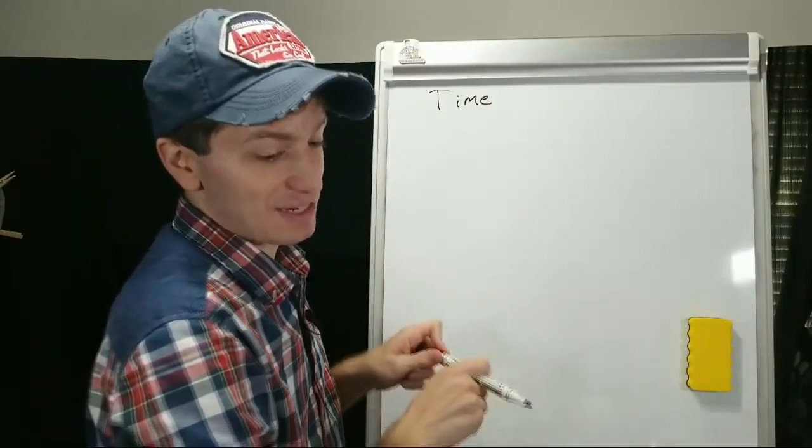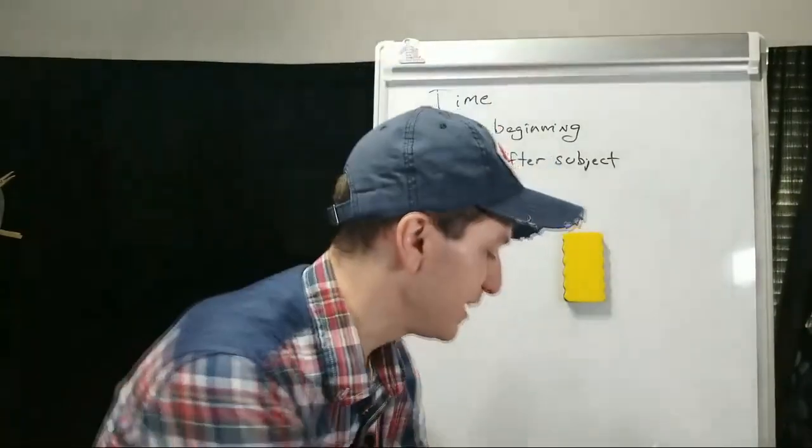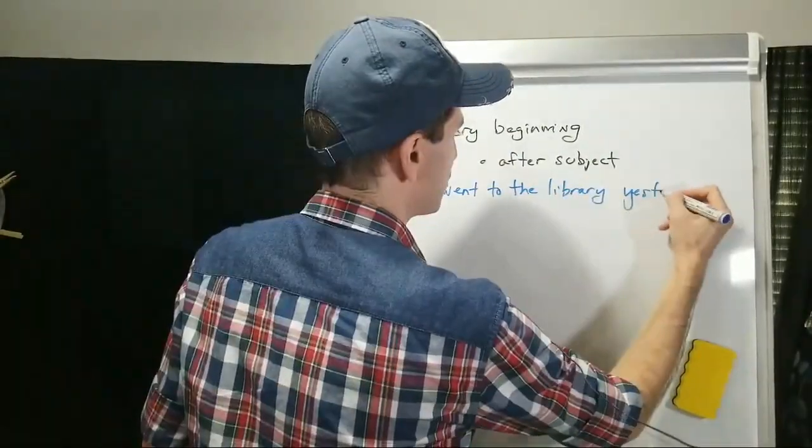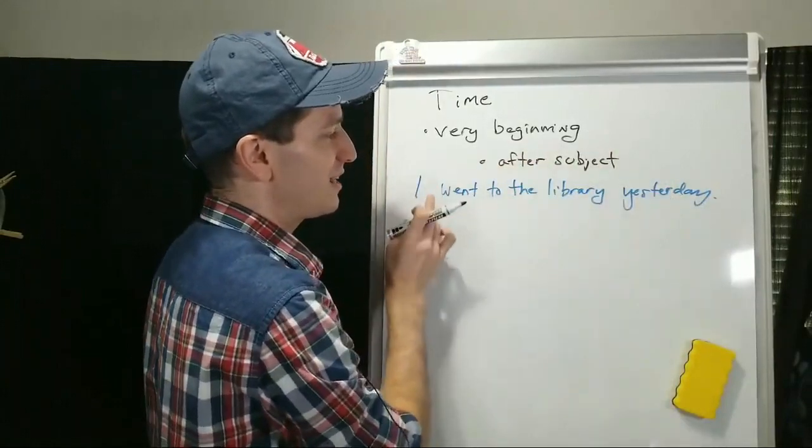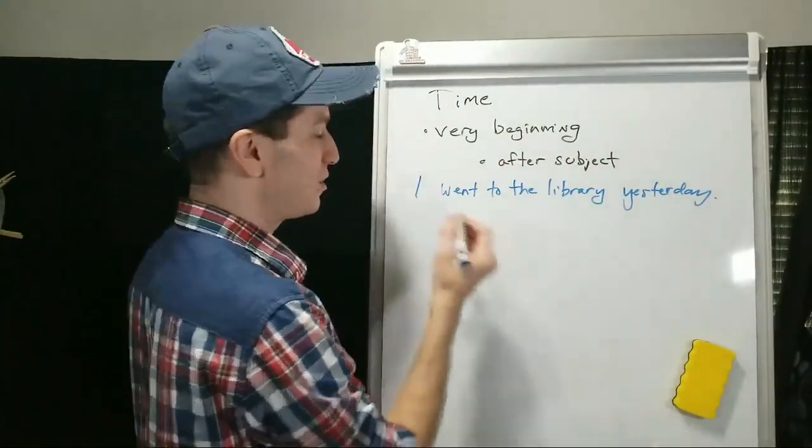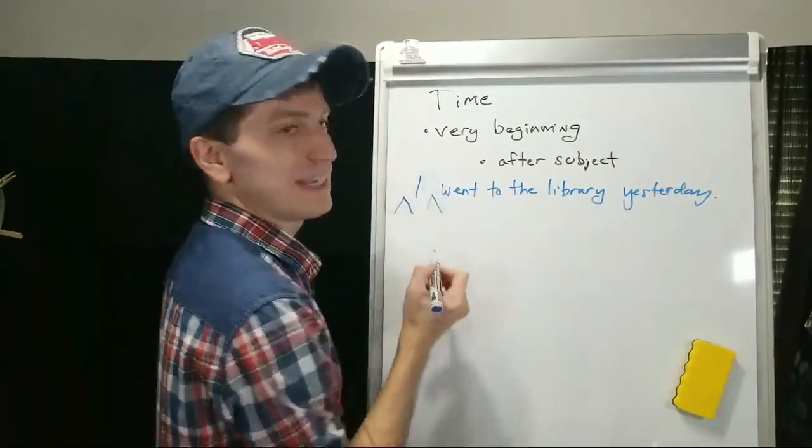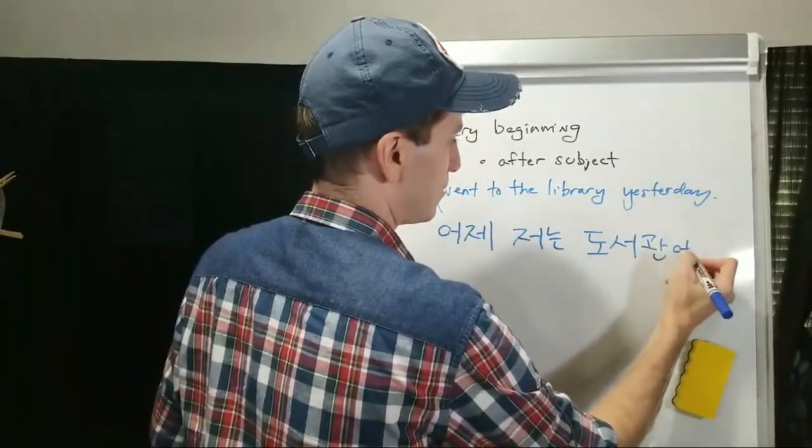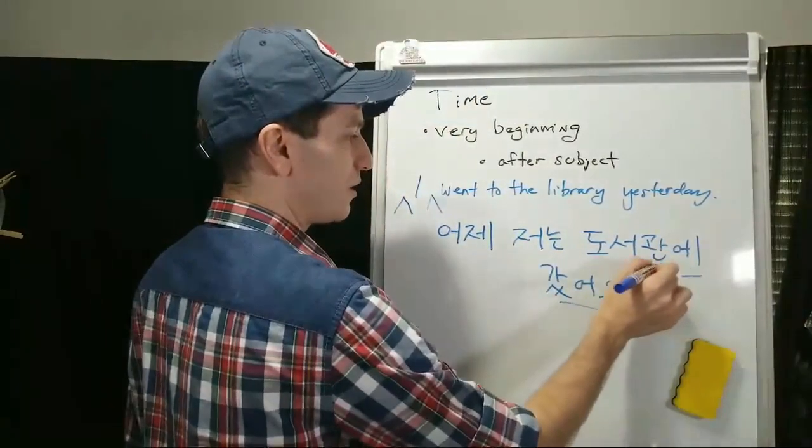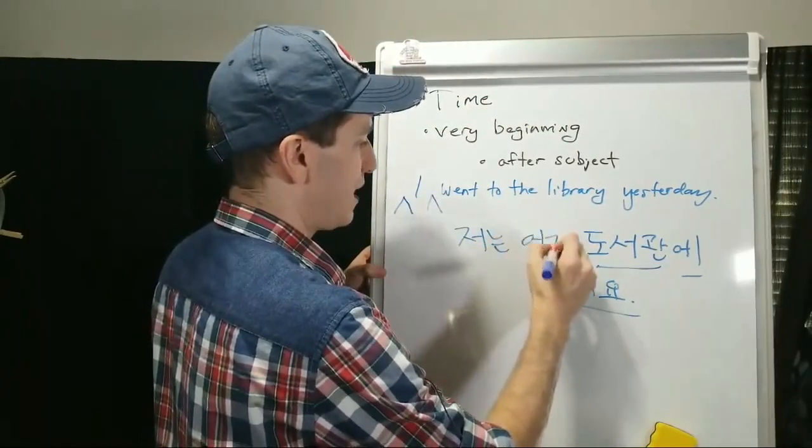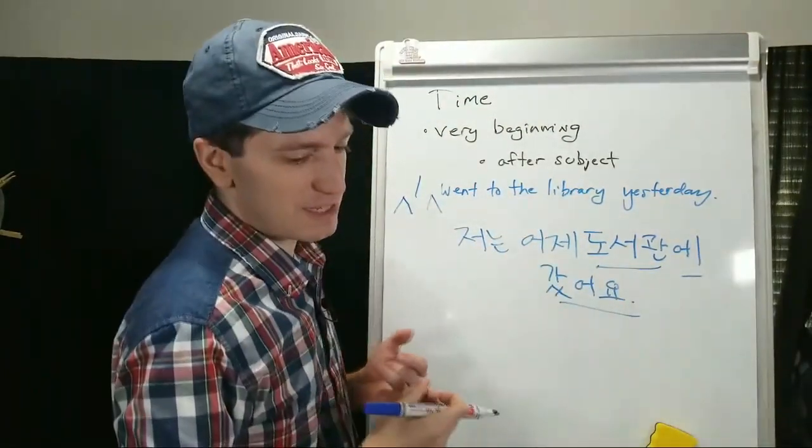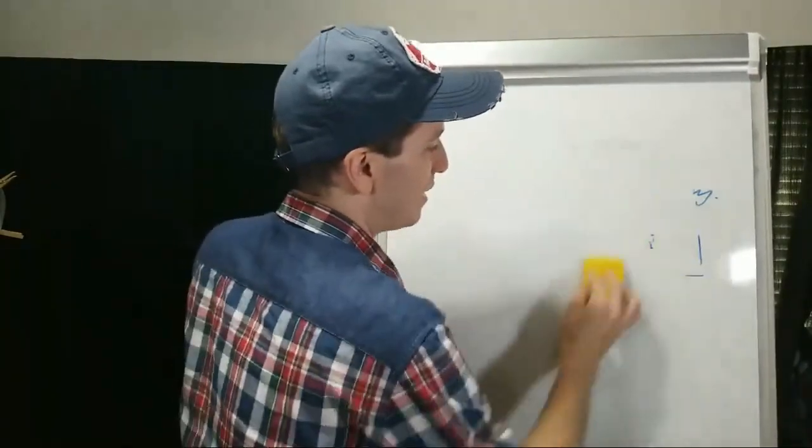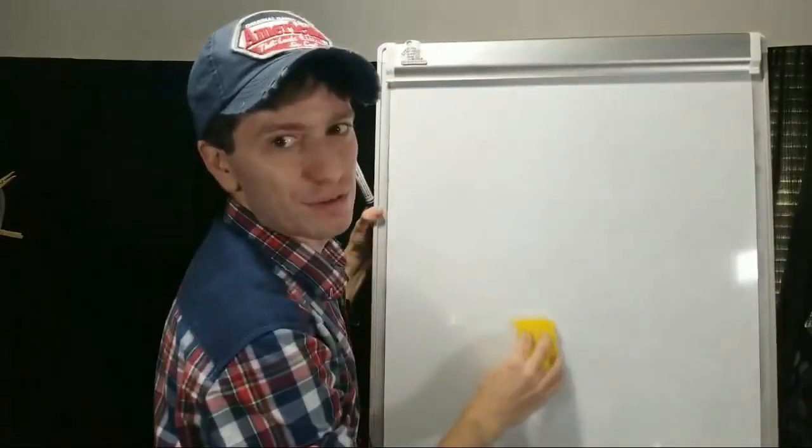Time. When something happened. There's two places to put this. You'll either use this in the very beginning of a sentence, or after the subject. I went to the library yesterday. The time will go at the very beginning of the sentence, or right after the subject, which means you'll either put the time here after the subject, or right here at the beginning of the sentence. 어제, for I, 도서관, 도서관 means library, 에, to 갔어요. I went to the library yesterday. Or 저는 어제 도서관에 갔어요. Sometimes things are moved around and there's a use for that, but typically this is the rule.